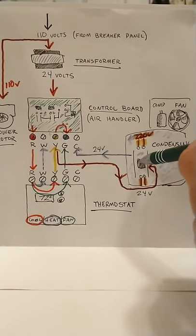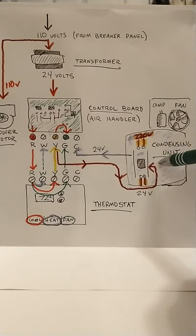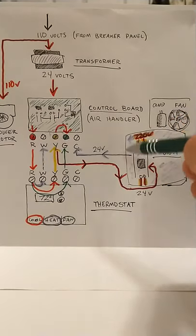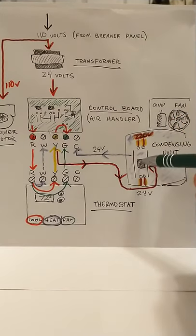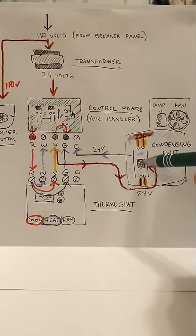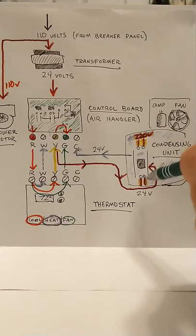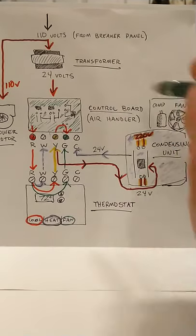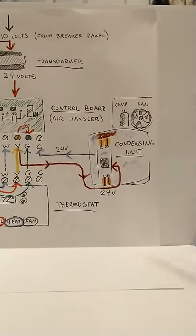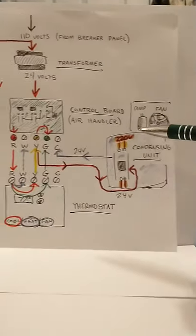It'll go to a contactor. When your 24 volts flows through that contactor, it creates sort of like a magnet that pulls that switch in. When that switch is pulled in, it allows your 220 volts to travel through it, which powers your compressor and your fan. So the whole outdoor unit will actually start up.